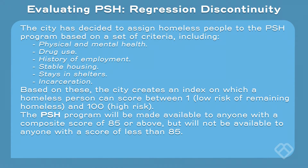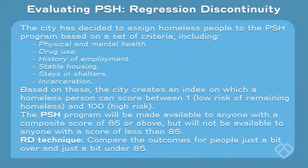The permanent supportive housing program will be made available to anyone with a composite score of 85 or above, but will not be made available to anyone with a score of less than 85. Under the regression discontinuity technique, you compare the outcomes for people who are just a little bit over and just a little bit under 85. People just above or below 85 are virtually identical — it was a totally arbitrary cutoff — so you have something very close to a random mix of people assigned to permanent supportive housing and those who did not get it.